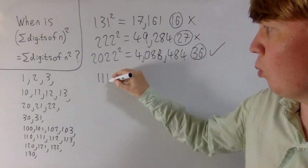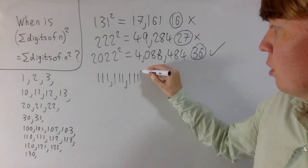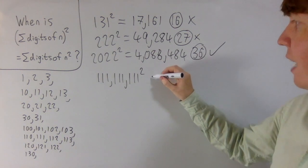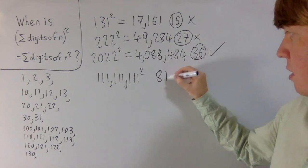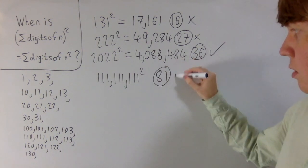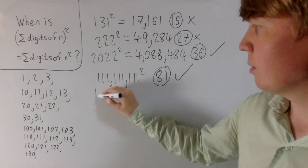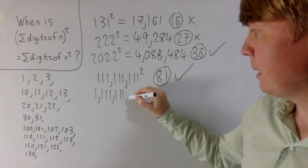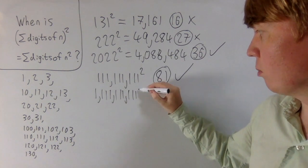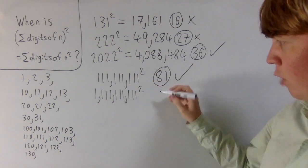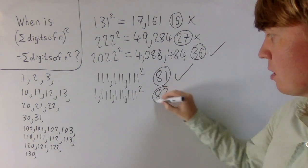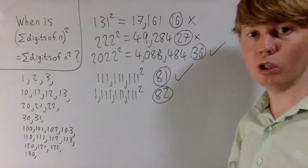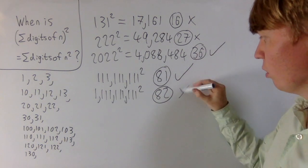And actually, even if we just look at 1s — if you have a number with 9 consecutive 1s squared and look at the sum of digits, this is 81, so this does satisfy our rule. Then if we add another 1, so we've got 10 1s in a row and then square this, the sum of digits is 82 instead of 100. So this doesn't satisfy our rule either.